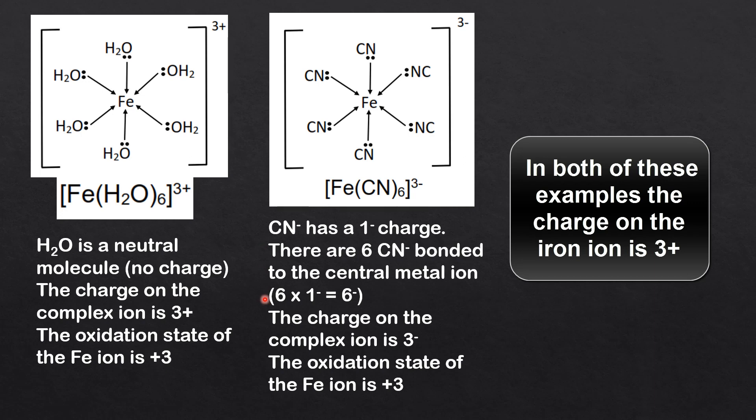That's a total negative charge of 6 times 1 negative equals 6 negative. The charge on the complex ion is 3 negative. Therefore the oxidation state of the iron ion must be plus 3.